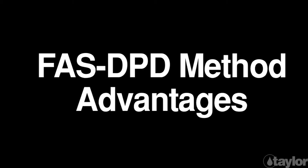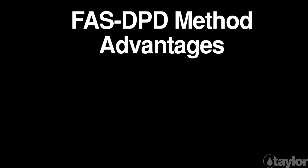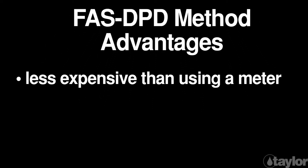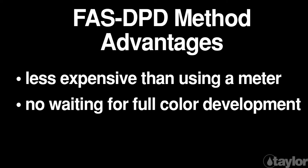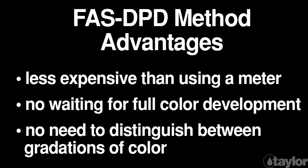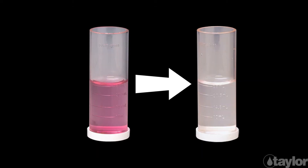The FAS DPD method offers several advantages. It's much less expensive than using a meter. There's no waiting time for full color development, and the analyst does not have to be able to distinguish between gradations of color. The endpoint is easy to recognize as the color of the sample changes from a vibrant pink to colorless.